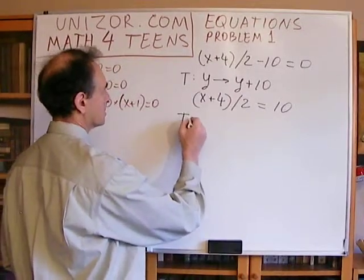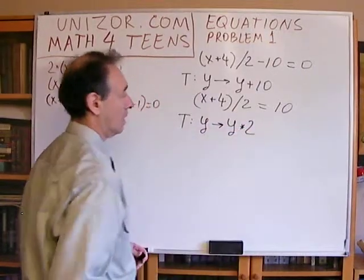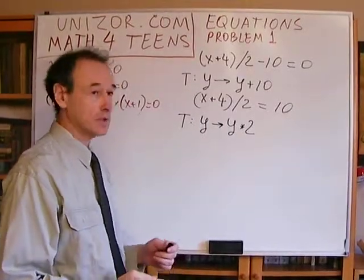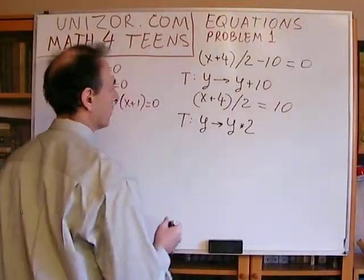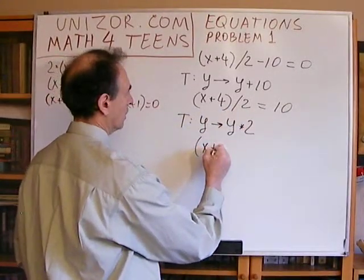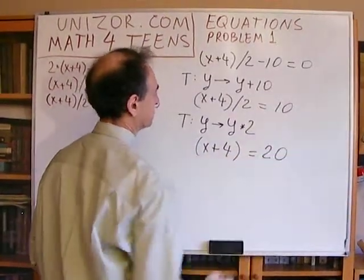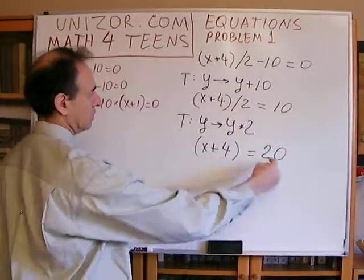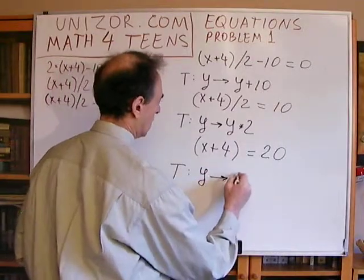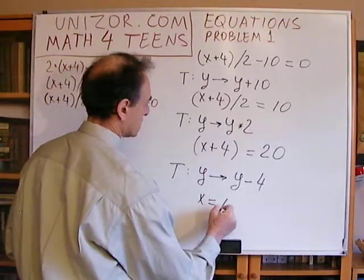The next transformation is multiplication by 2 — an invariant transformation because multiplication by anything not equal to 0 is invariant. So I will have x plus 4 divided by 2 multiplied by 2, which gives x plus 4 equals 20. The third transformation is subtracting 4 from both sides, giving x equals 16.